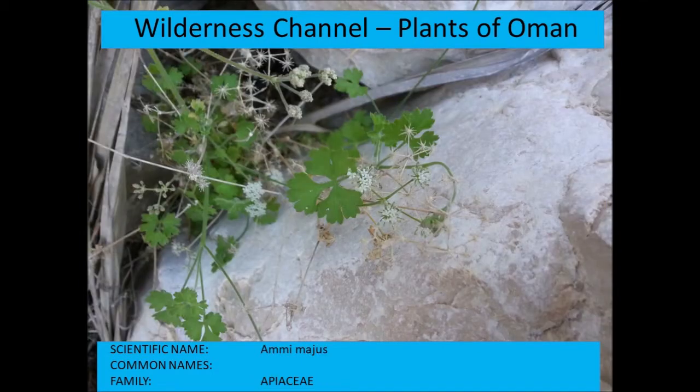Ammi majus is a plant from the Apiaceae or carrot family that grows in Dhofar. You typically find it in rocky areas on the slopes just off the wadi beds — a very delicate plant.